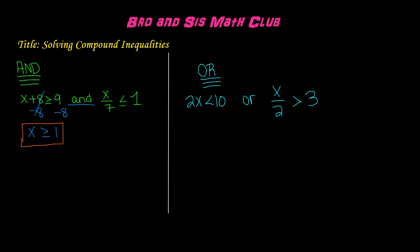Now let's find the solution to x over 7 is less than or equal to 1. If x is being divided by 7, we must use the inverse of division, which is multiplication. So we will multiply by 7 on both sides. It cancels the divided-by-7 out, and we are left with x is less than or equal to 7 times 1, which is 7. This is the solution to this inequality.